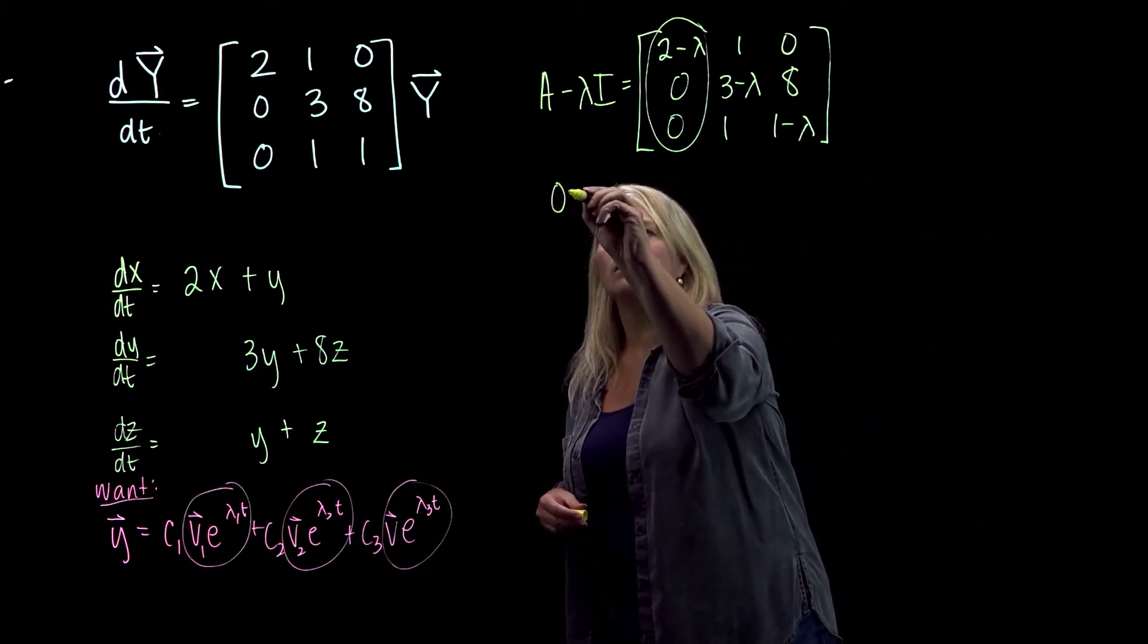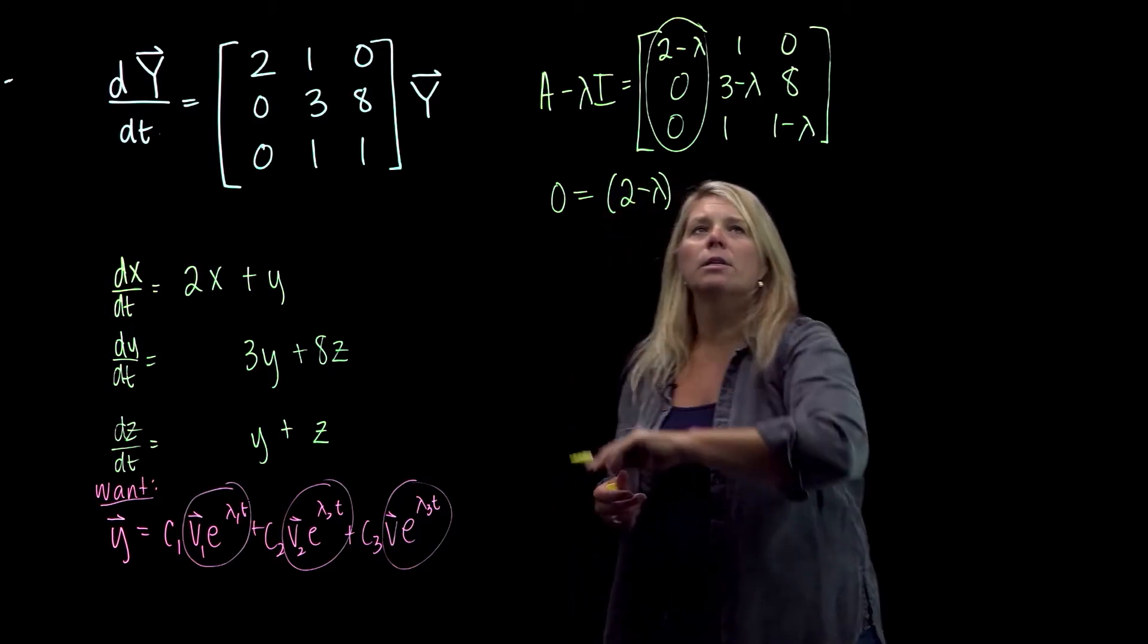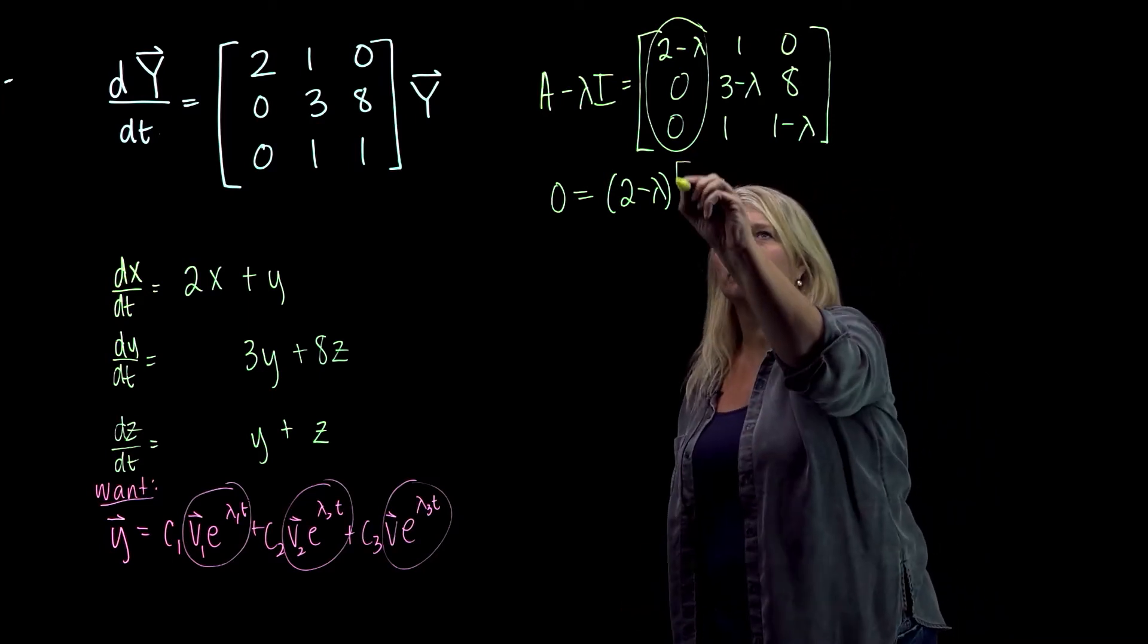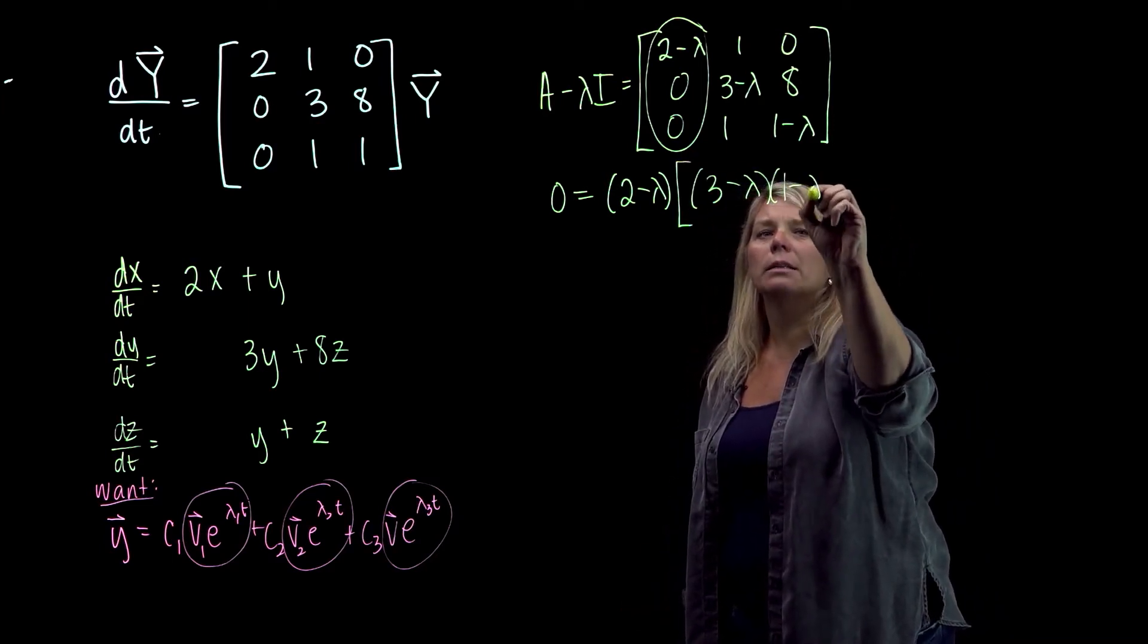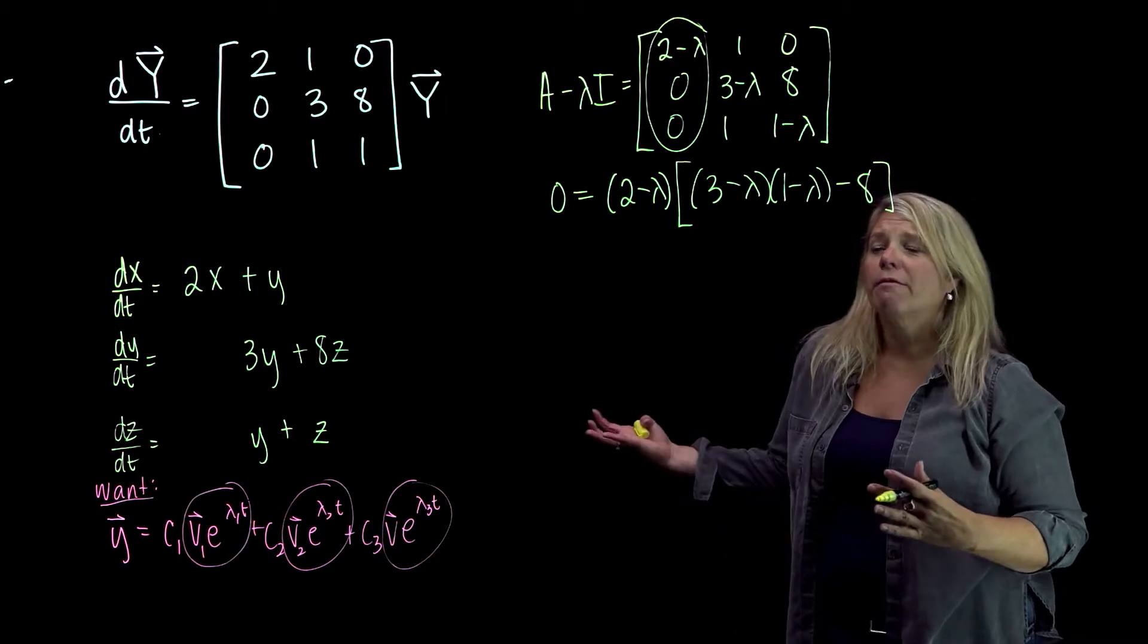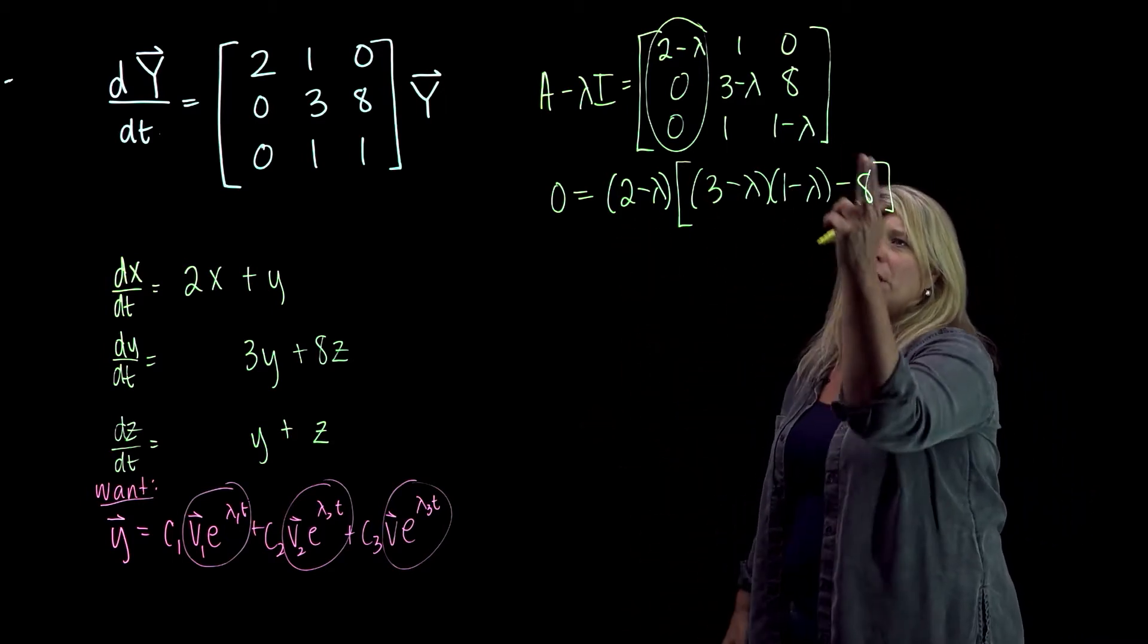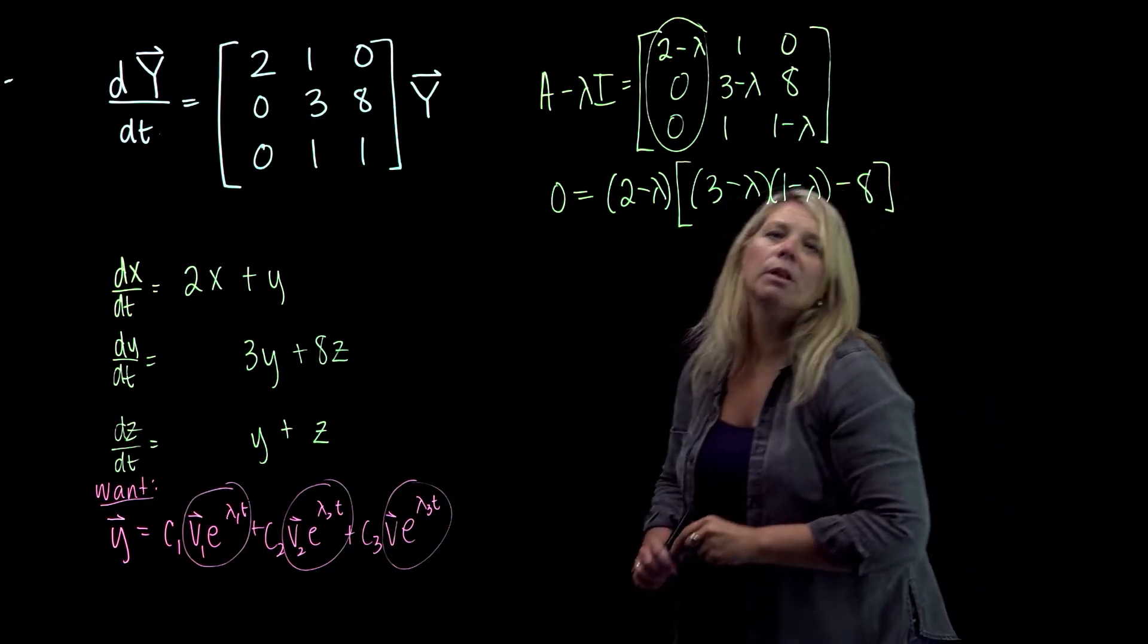So I'm going to have zero equals 2 minus lambda times the determinant of what's left when I eliminate the row and column that's in. So 3 minus lambda times 1 minus lambda minus 8. Again, this is partially factored, so don't unfactor the part that is already factored. But you will want to foil this out and then refactor that.